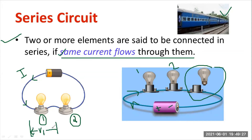So that will be V1 and this will be V2. The voltage values will be different, but the same current will be flowing through each element. That is the speciality of a series connection.